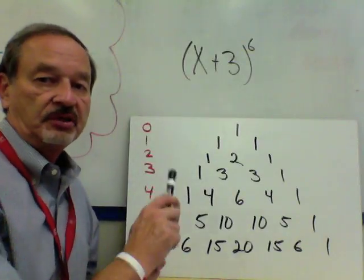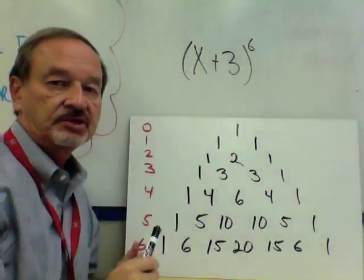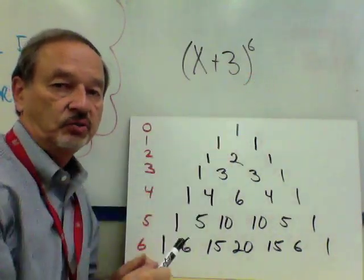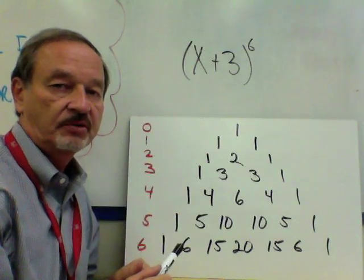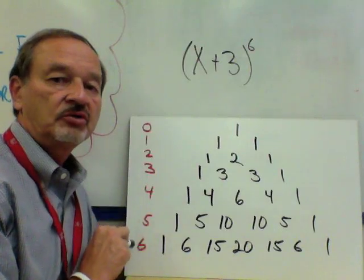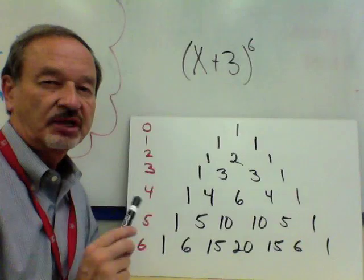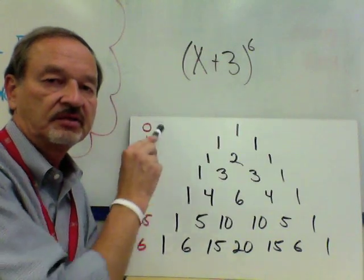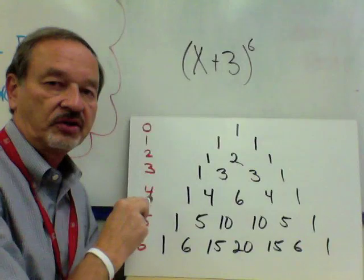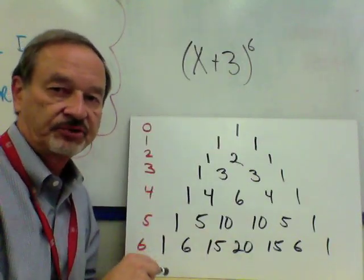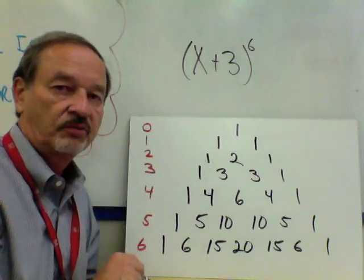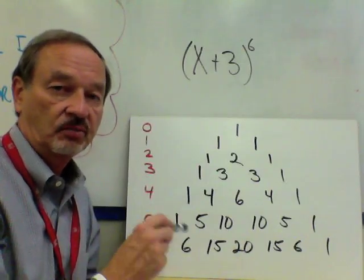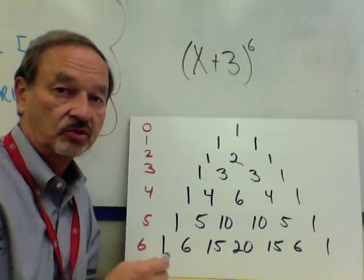The first step in using the triangle to expand this kind of problem is we look at what power we're expanding to. In this case we're expanding to the sixth power, so we're going to use the numbers in the sixth row. That's why in the previous video I told you it's very important to number the rows correctly — the top row is always row zero, and you number down as far as you've built it. The one you built should go all the way to row 10. Hang on to this triangle because you can use it over and over again.